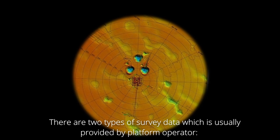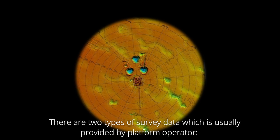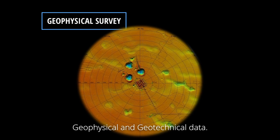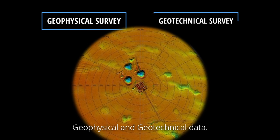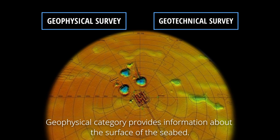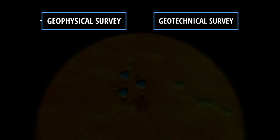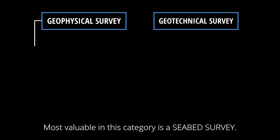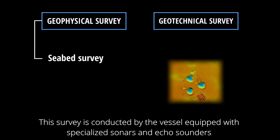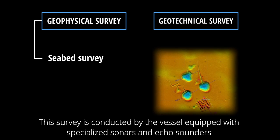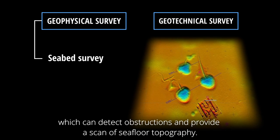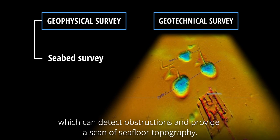There are two types of survey data which are usually provided by the platform operator: geophysical and geotechnical data. The geophysical category provides information about the surface of the seabed. Most valuable in this category is a seabed survey, conducted by a vessel equipped with specialized sonars and echo sounders which can detect obstructions and provide a scan of seafloor topography.